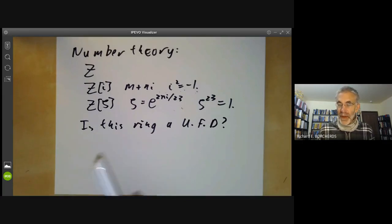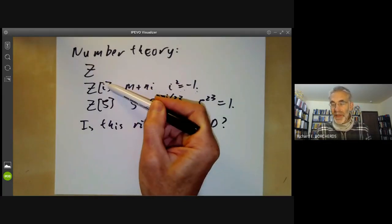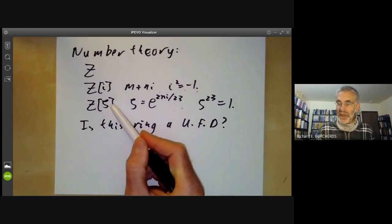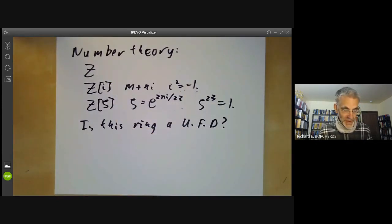For instance, these two are unique factorization domains, and this one, as Kummer showed, is not a unique factorization domain.